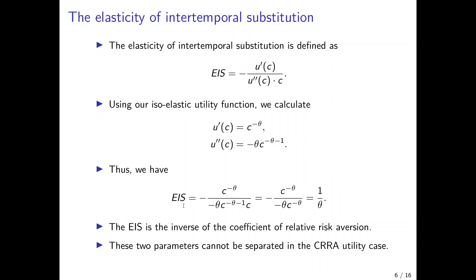So indeed, the elasticity of intertemporal substitution is the inverse of the coefficient of relative risk aversion, and these two parameters cannot be separated in the isoelastic or CRRA utility case.